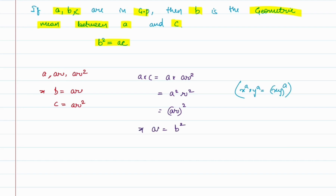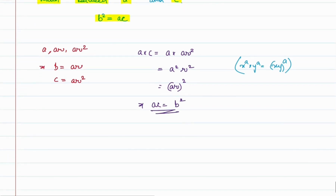So the product of the first and the last term equals b². Taking the square root on both sides, we get b equals the square root of a into c. This means the geometric mean between two terms is equal to the square root of the product of those terms.